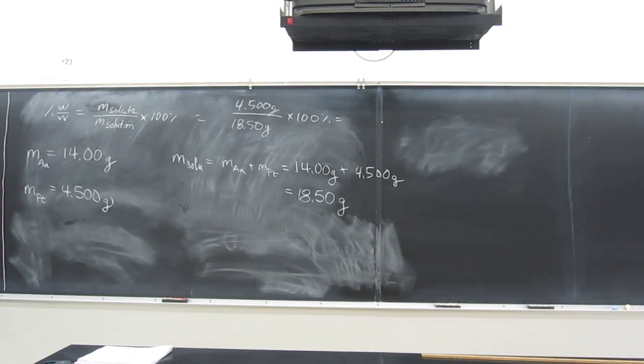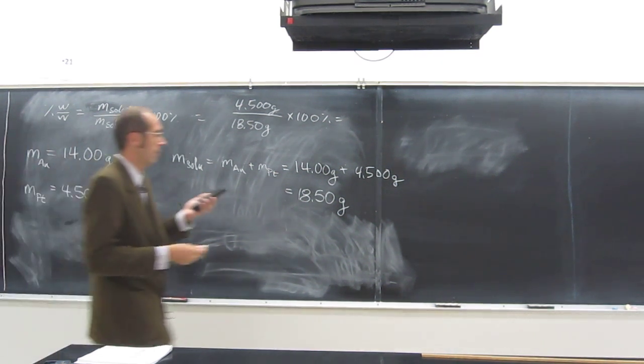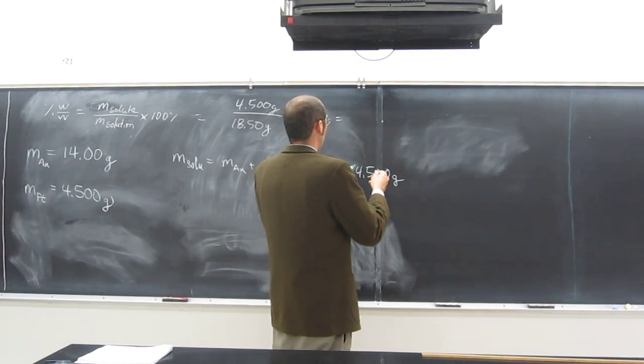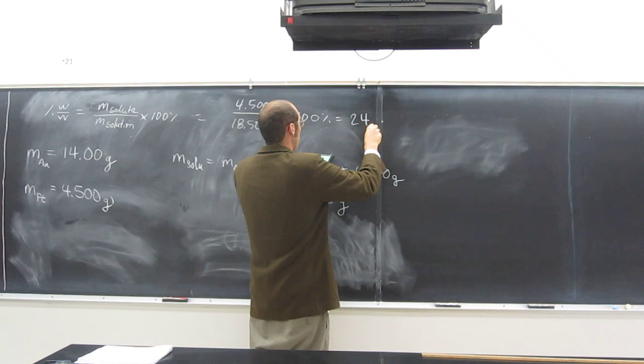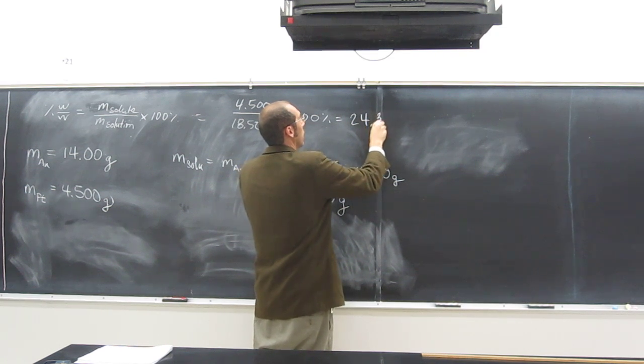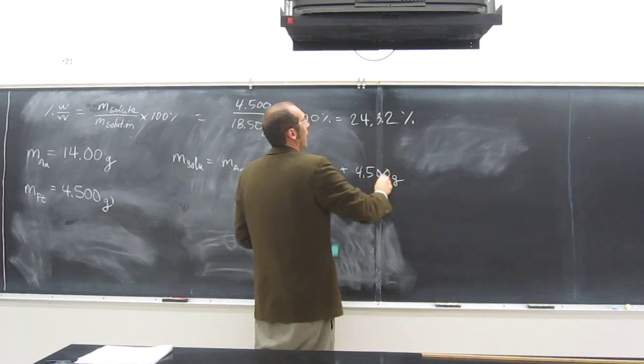How many sig figs is the answer going to have? Four. You guys are fine. So what's the percentage of platinum in my ring? 24.32%. Okay.